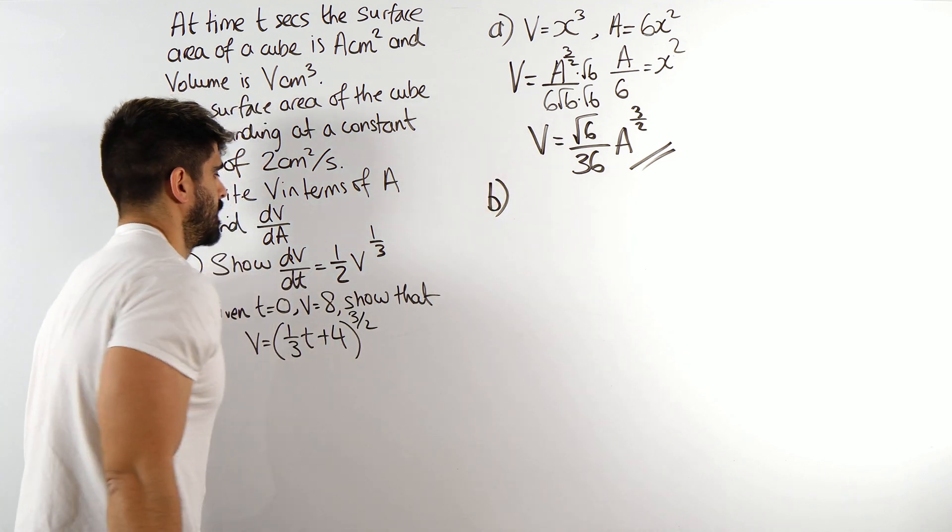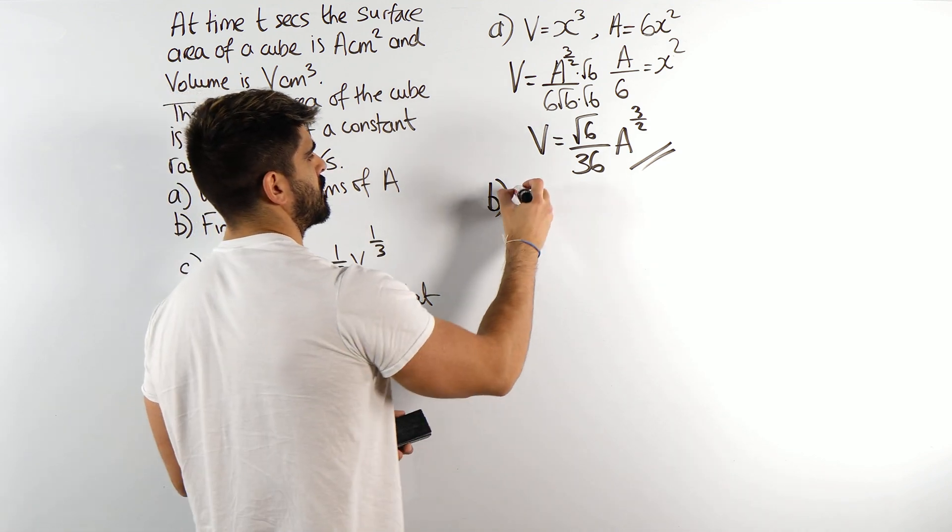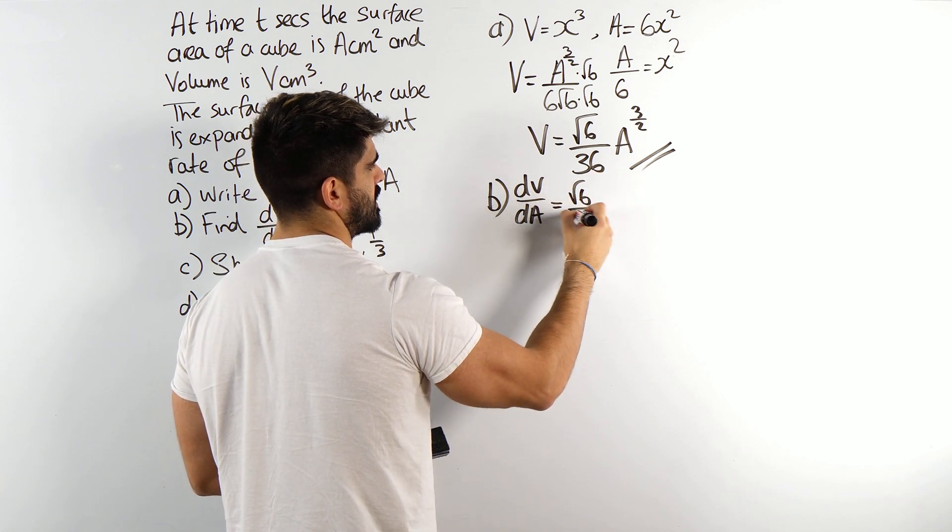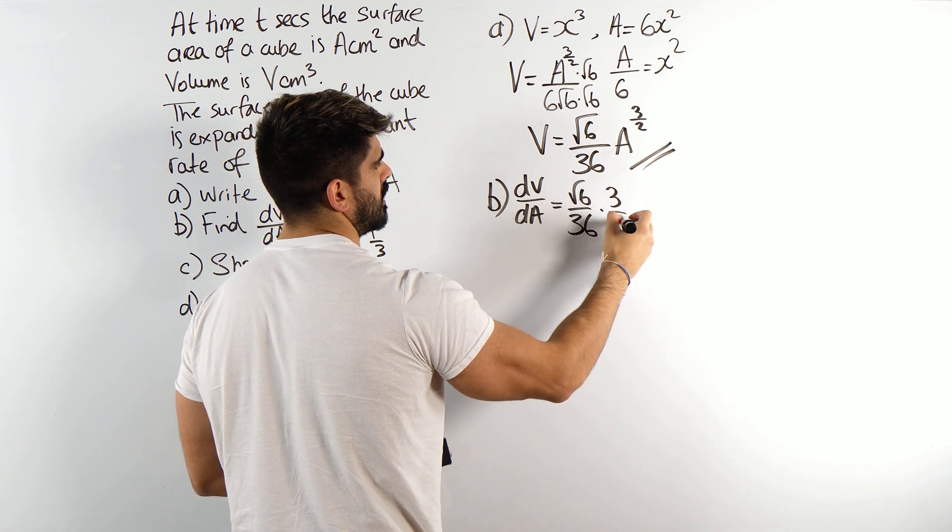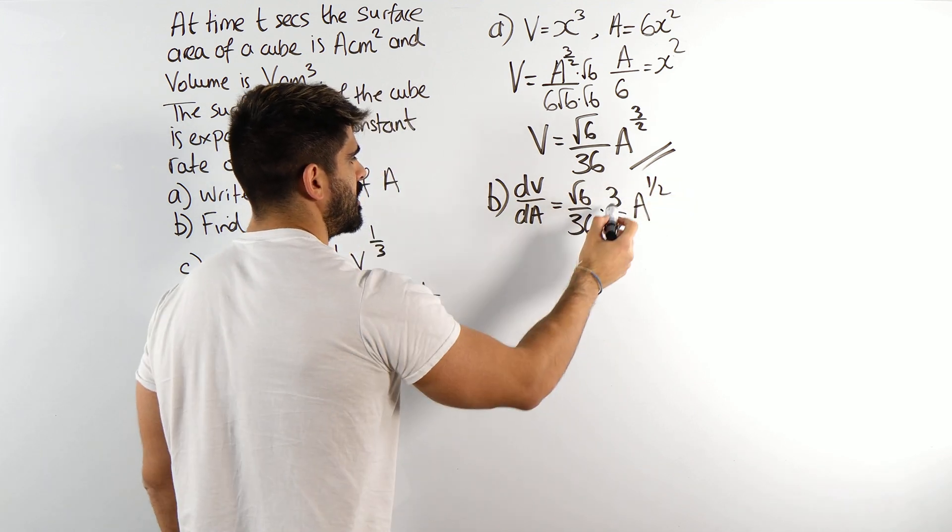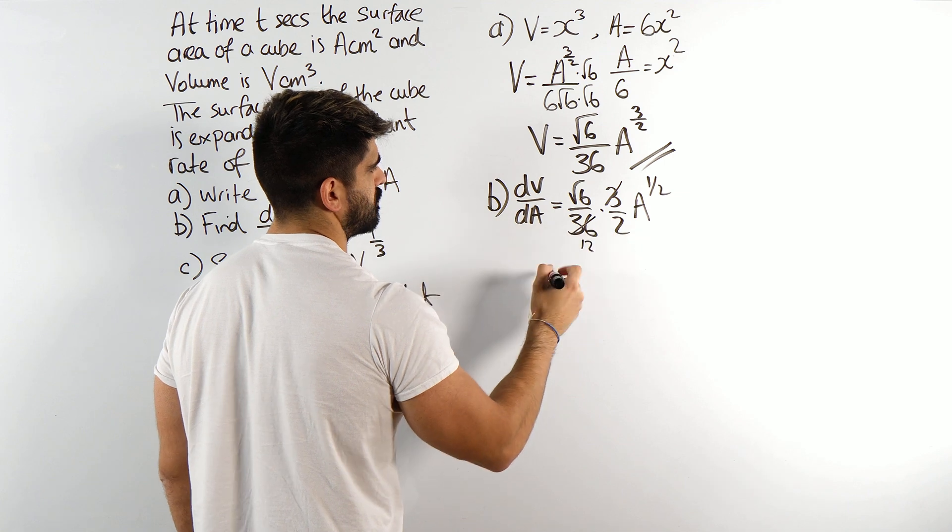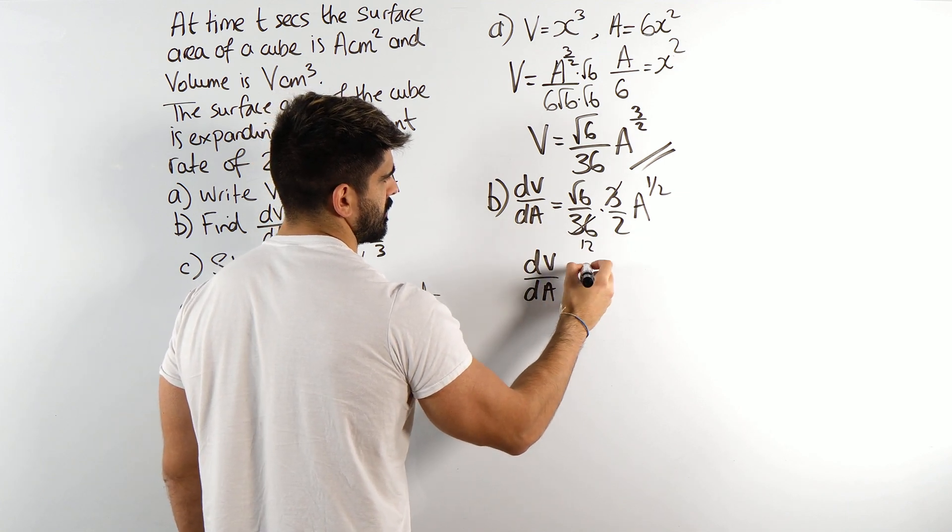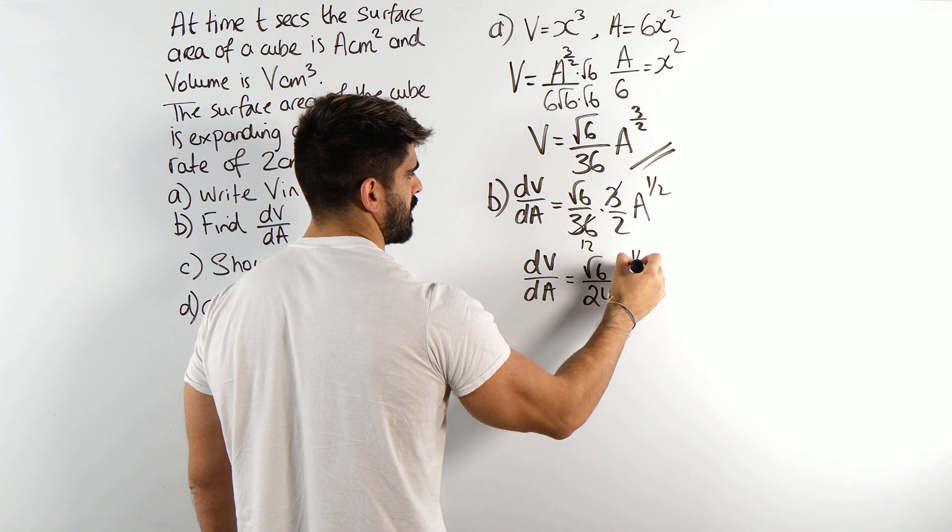Part B. Find dV/dA. Okay, that's nice and easy. So dV/dA is going to be this root 6 over 36. Bring down the power. This is just simple power function chain rule. A, knock one off the power. So here the only thing that happens is that 3 cancels the 36 12 times to make root 6 over 24. So you have root 6 over 24, A to the power of a half.